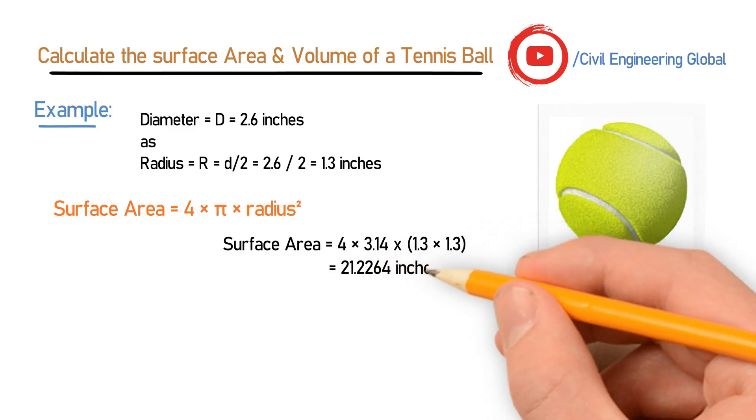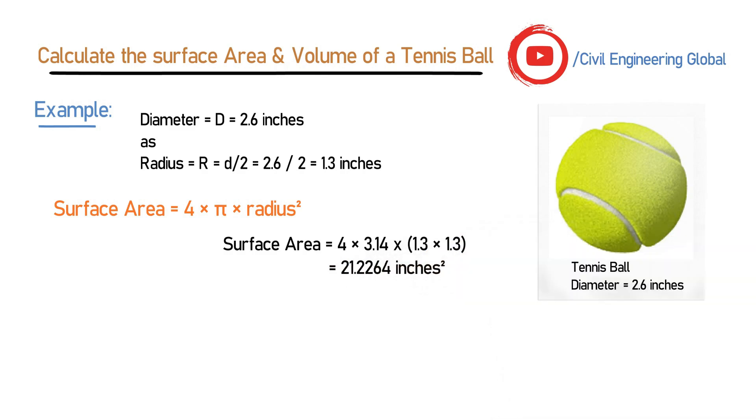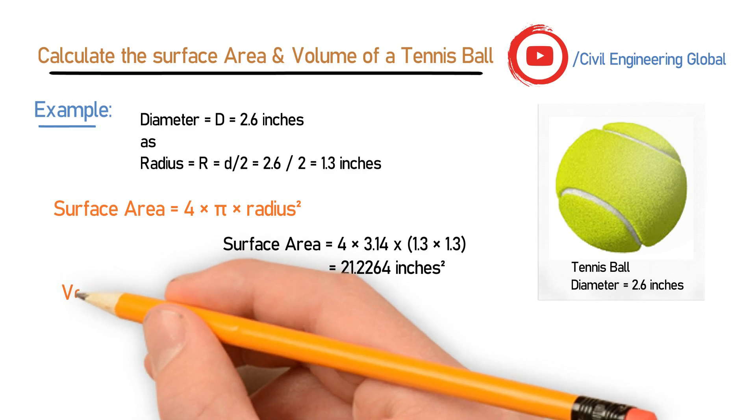This will give you 21.2264 inches². After finding out the surface area, we will try to calculate the volume.